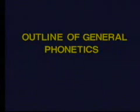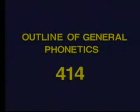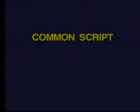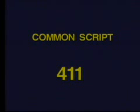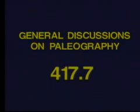Please turn to the table on 410. Outline of general phonetics is 414. A book on common script would be under 411. General discussions on paleography — also known as historical linguistics and the study of early writings — would be under 417.7.